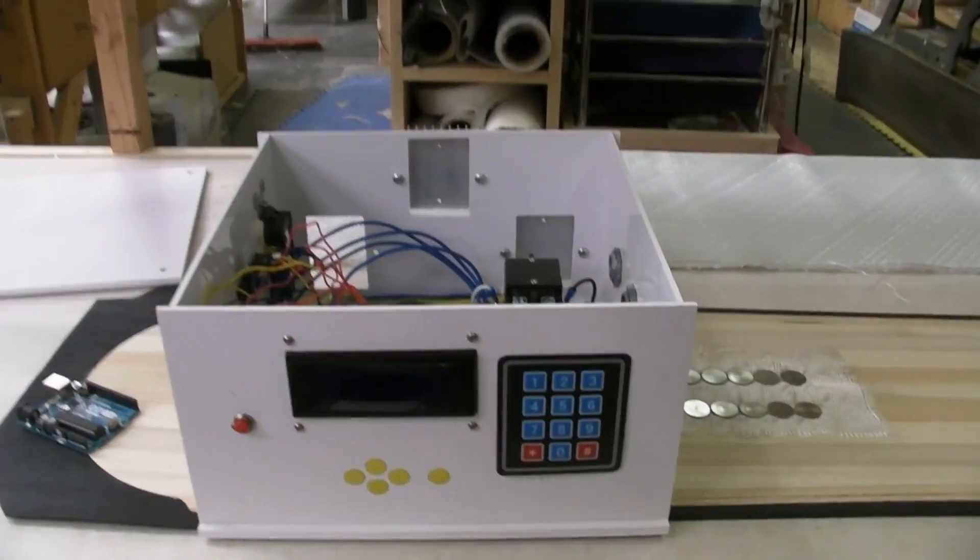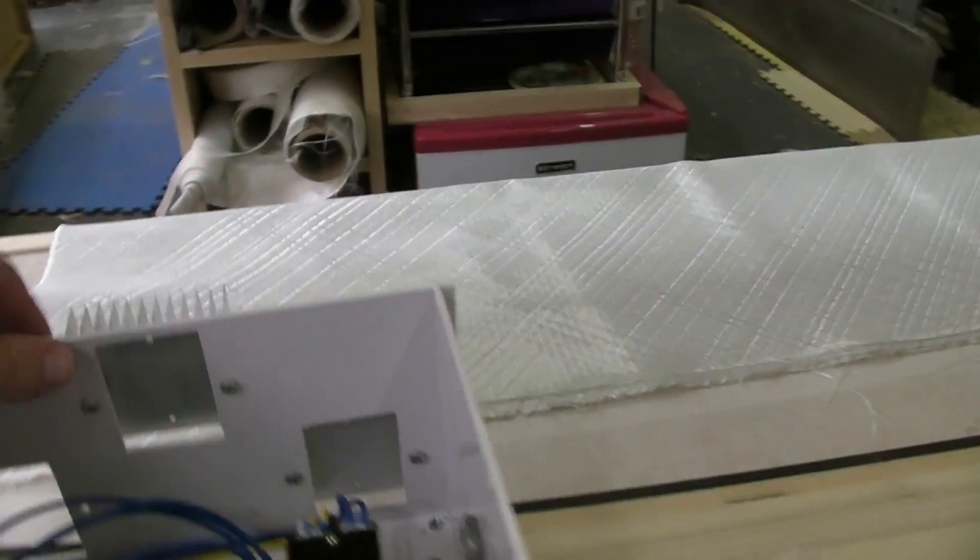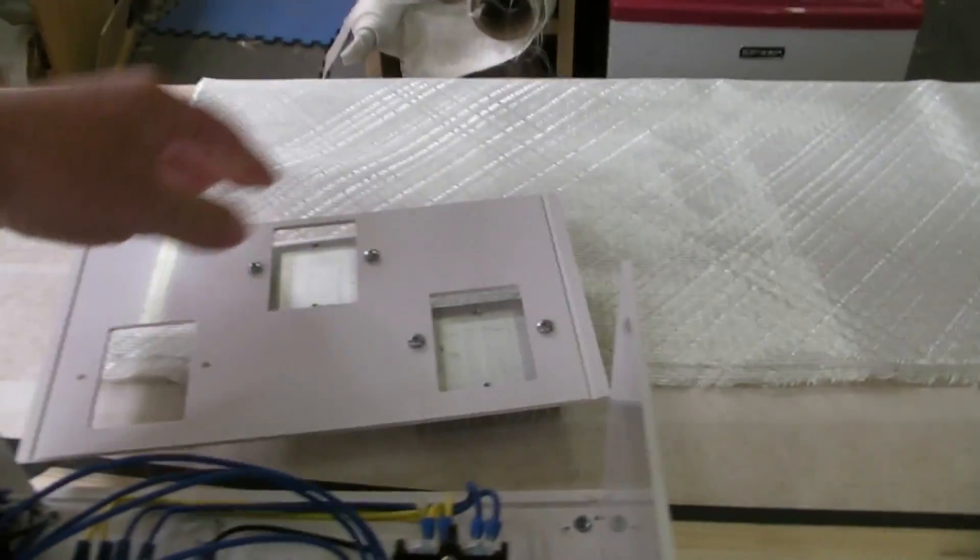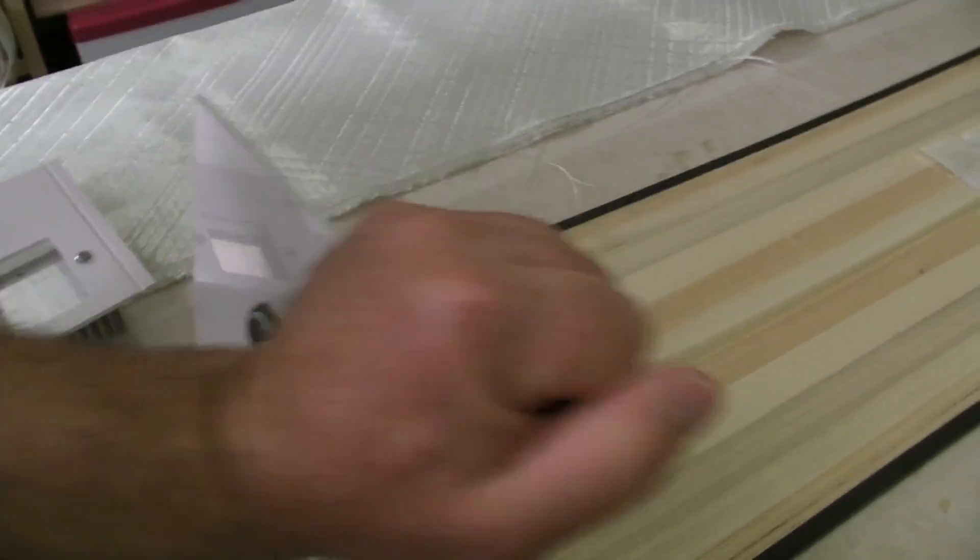This is all made out of ABS plastic and cut on our CNC. And what's kind of cool about this is it breaks down and, sorry, hard to hold the camera and do this at the same time.